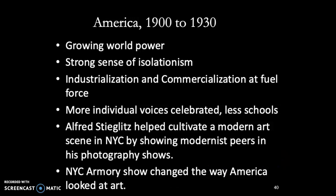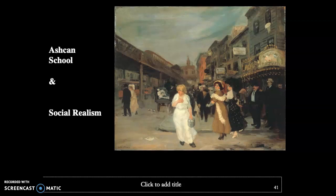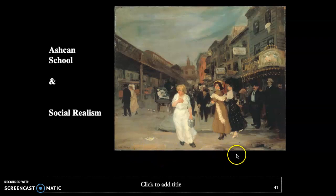Just before the turn of the 1900s, we have the Ashcan School, which is reminiscent of Impressionism — there's an unfinishedness about it and an in-the-moment quality. But it's looking at the social realism of cities and urbanity. The paintings often have a darker feel than Impressionism, though sometimes they are a celebration of American modernity.